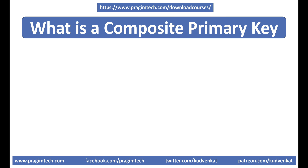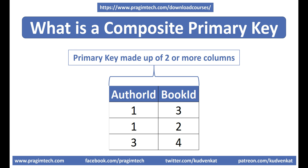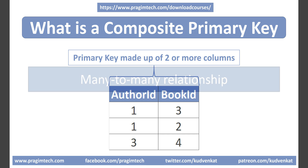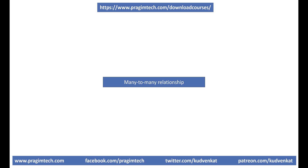So what is a composite primary key? Well, a primary key that is made up of two or more columns is called a composite primary key.